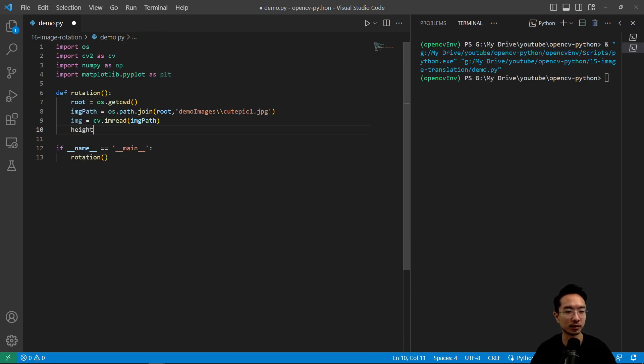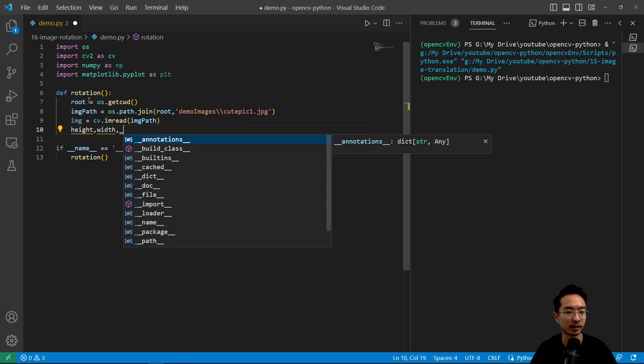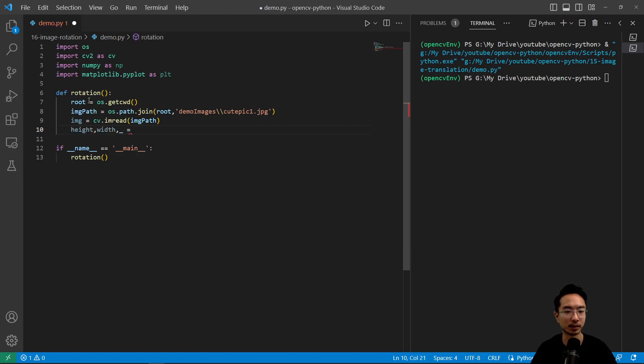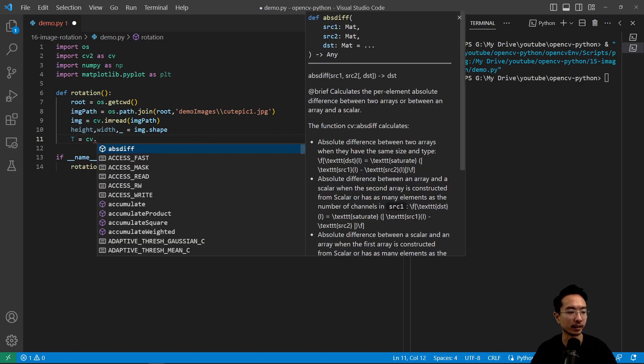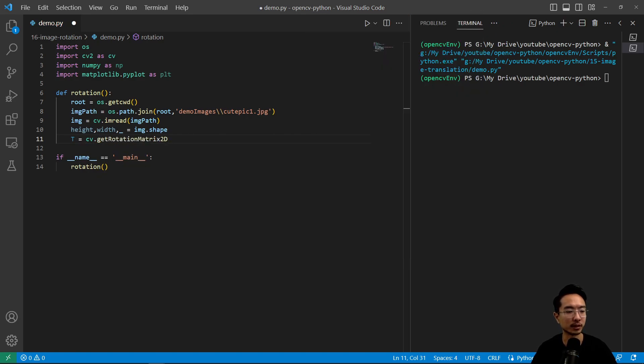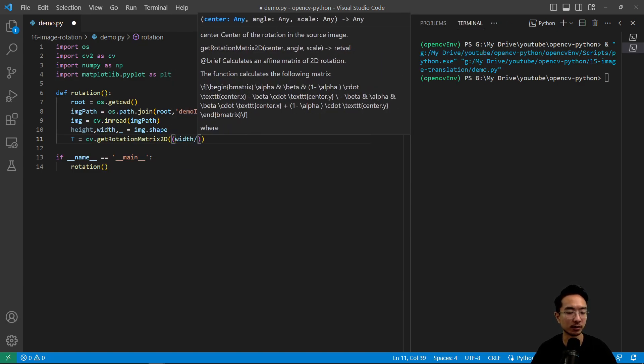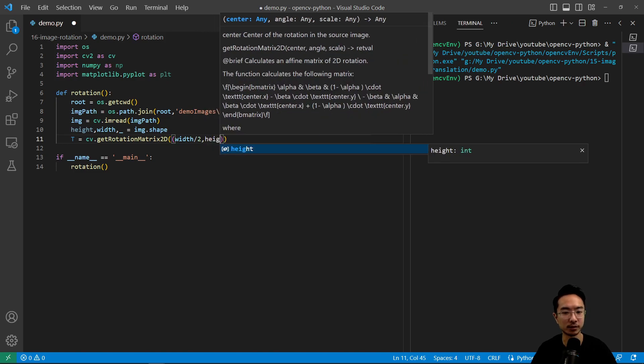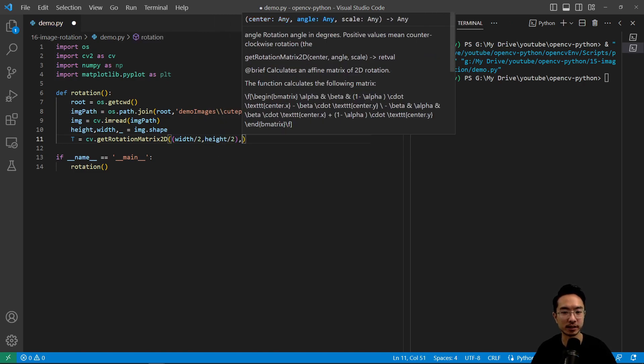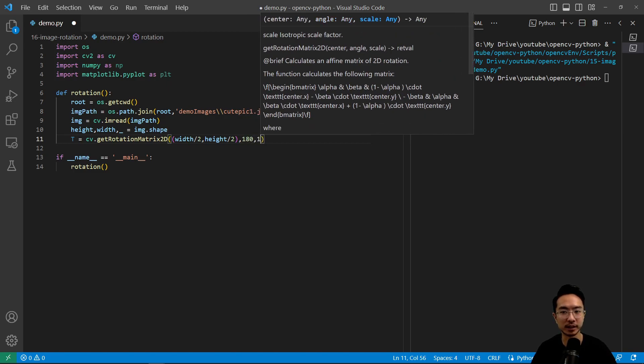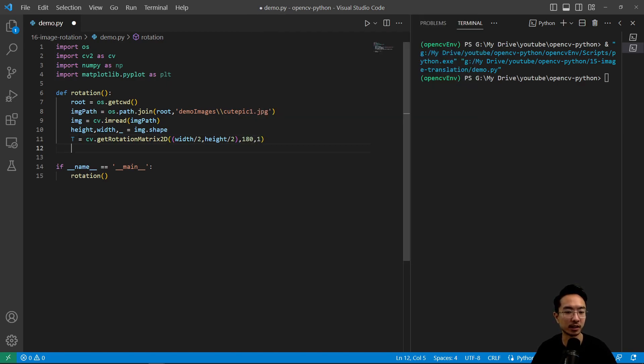And then we want to get our size of our image. And this is like last time we need it because for our output dimension, we need to specify the dimension of our output. Okay, so we're going to generate a transformation matrix. We're going to call it T. And then we're going to say get rotation matrix 2D. And first we're going to pass the center location, which is width divided by 2 and then height divided by 2, which means that we'll be in the center. And then our angle rotation is 180. And then the scale, since we're not scaling, we'll put it as 1.